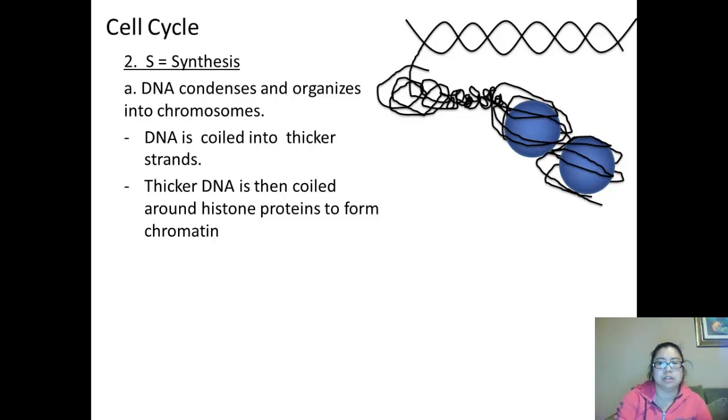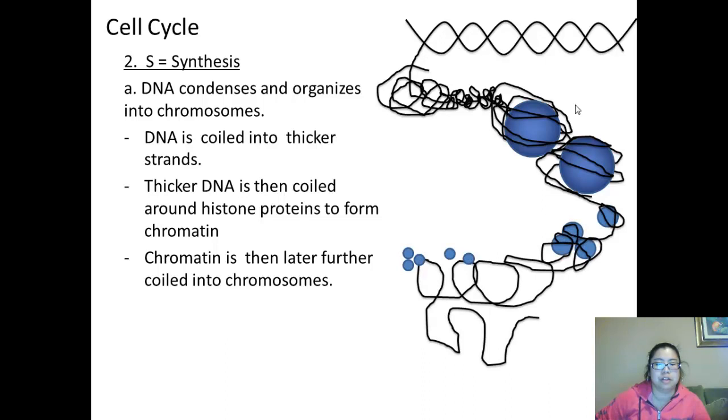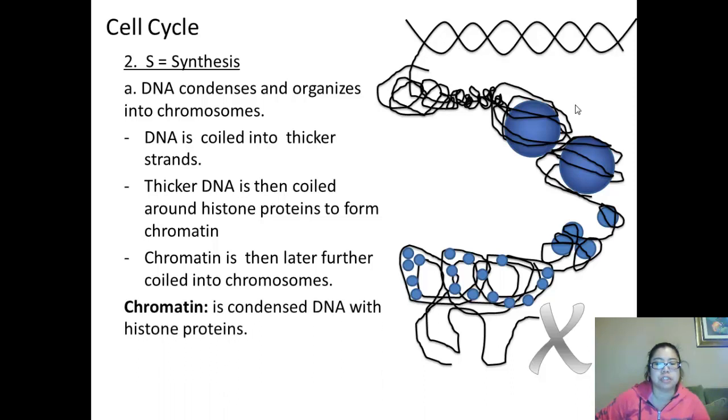Here, DNA is coiled into thicker parts. Then the coiled DNA is coiled around the histone proteins, and them two together. Chromatin is then later coiled into chromosomes. So here, the histones together will form chromatin, and then later it will coil into chromosomes. Chromatin is condensed DNA with histone proteins. Histone proteins are proteins used to organize DNA by coiling around it.